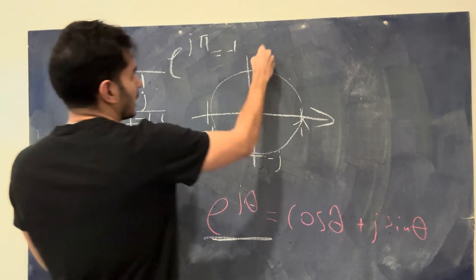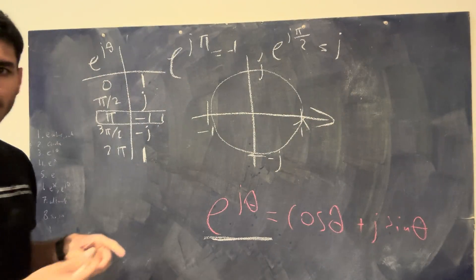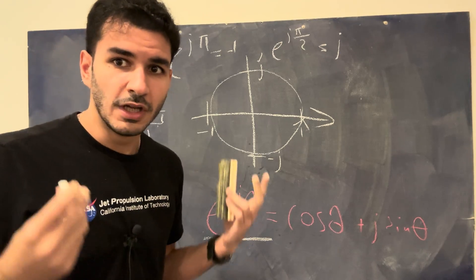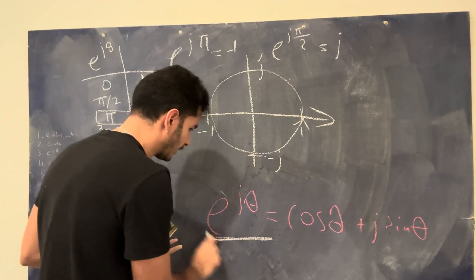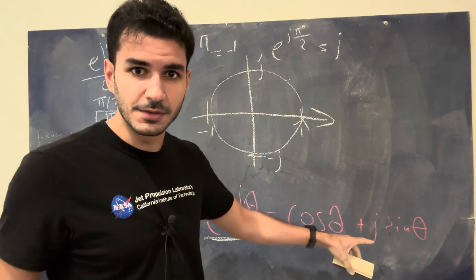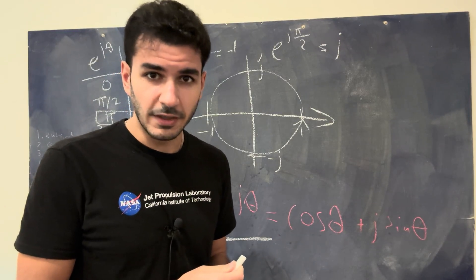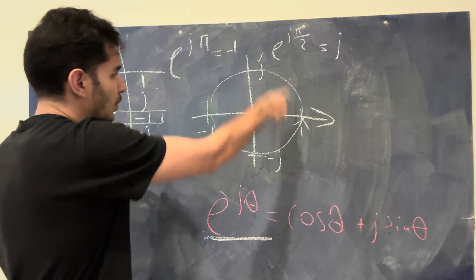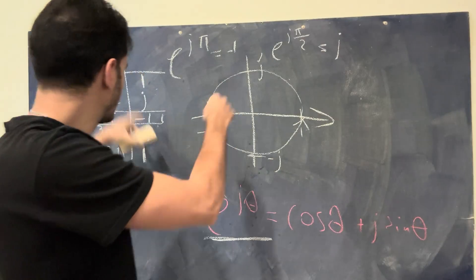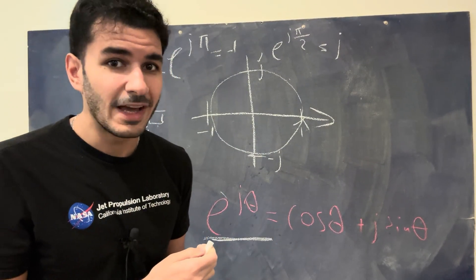If we plug in another number, like e to the j pi over 2, that just gives us j. So I don't really think there's anything special going on with that specific form. The real beauty is the question: how does this exponential function e, raised to some term, give us sines and cosines — oscillatory, sinusoidal terms? Why is this equation going in a circle when it has an exponential function? To me, that is the real beauty.